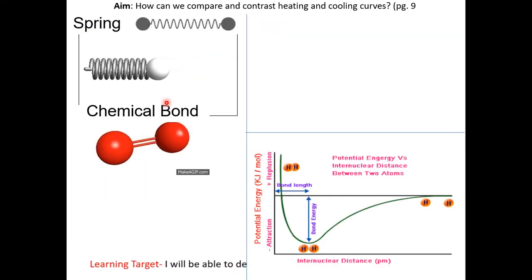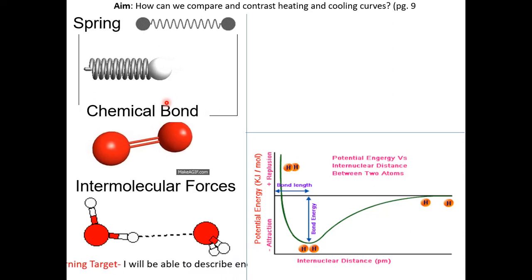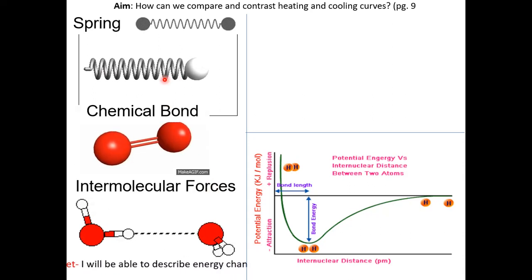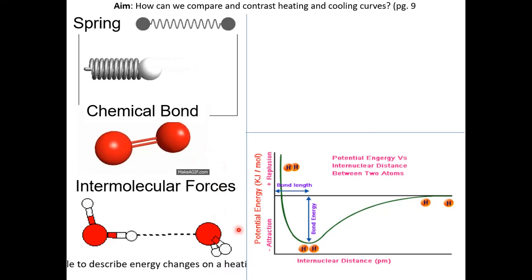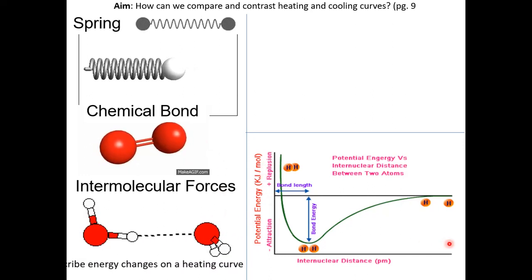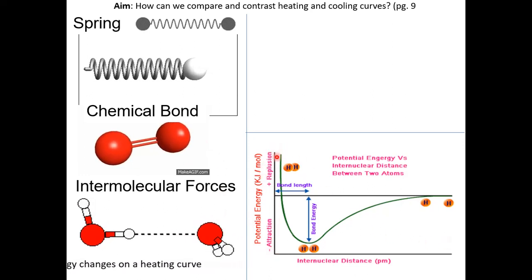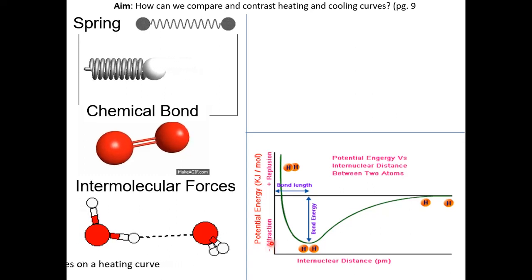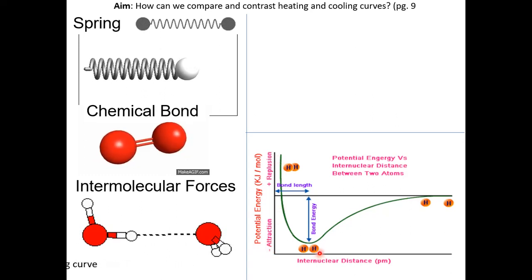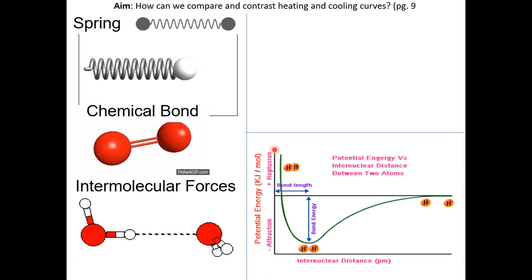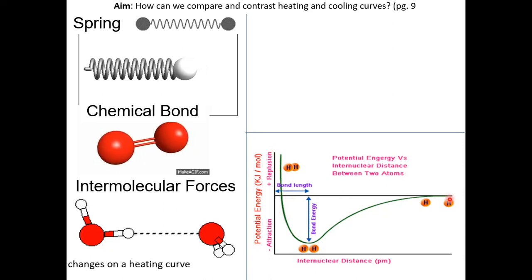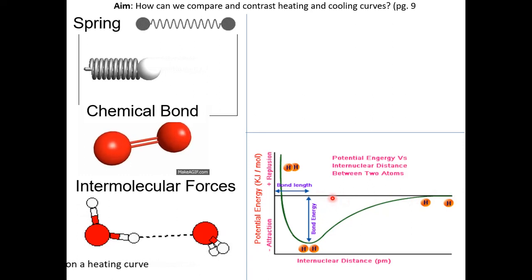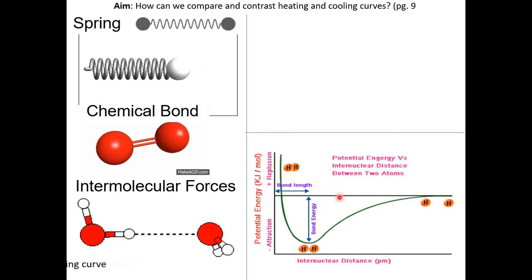Imagine the chemical bond and intermolecular force is a spring vibrating back and forth, as you can see here in this gif. This graph should look familiar to you. On the y-axis is the potential energy — the lower it is, the more stable it is; the higher the potential energy, the more unstable it is. The x-axis represents the bond length or the distance between the two atoms.